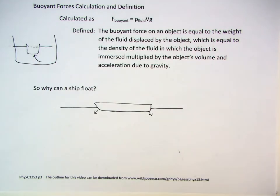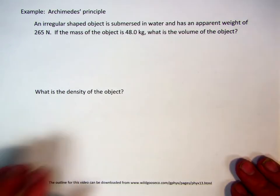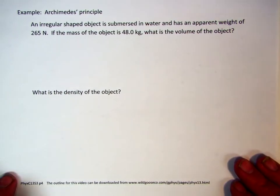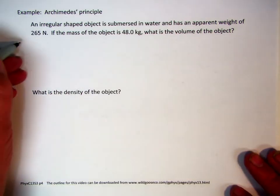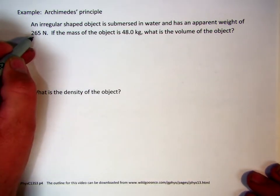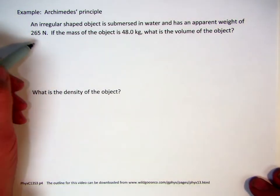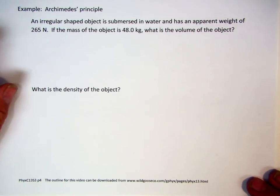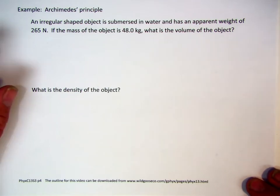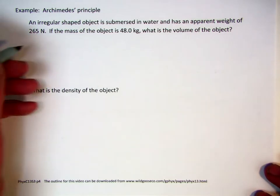Now, let's try a couple of calculations with these things. Archimedes Principle. An irregular shaped object is submersed in water. It has an apparent weight of 265 Newtons. Now you remember I said that you've got an upward force. And I actually do this in my classroom. If I put a set of scales on an object and I put it in water, it always weighs less in the water because of the upward force of the water, which is a result of how much water we've pushed out of the way.